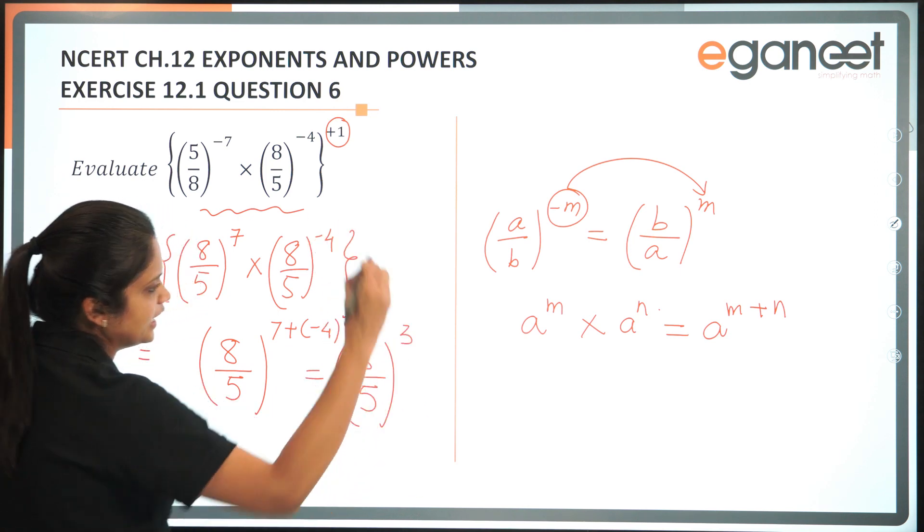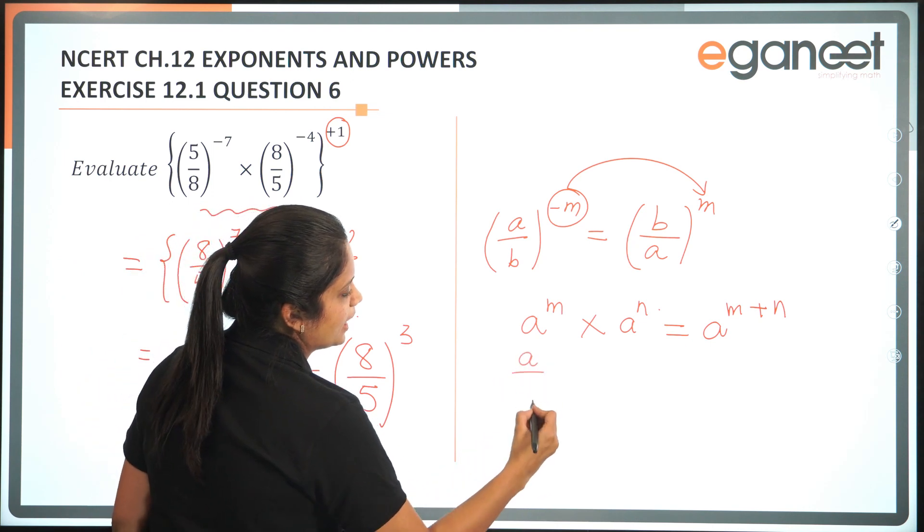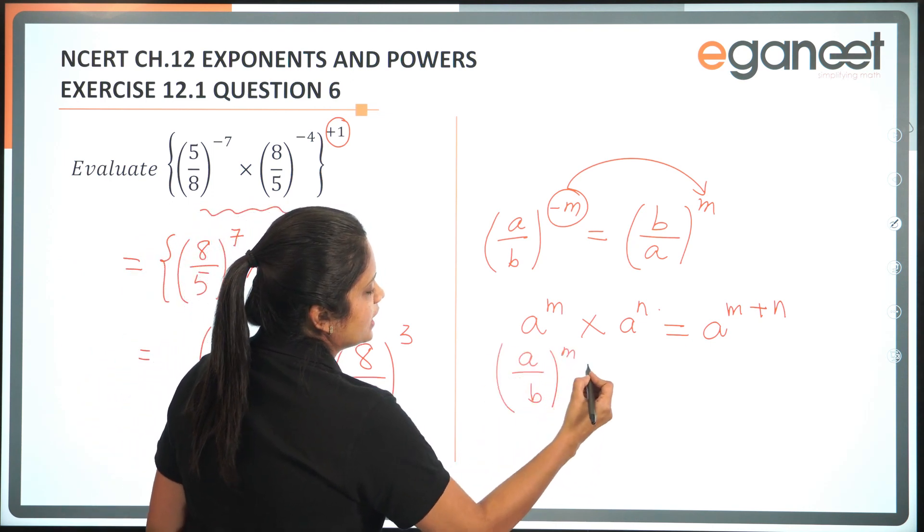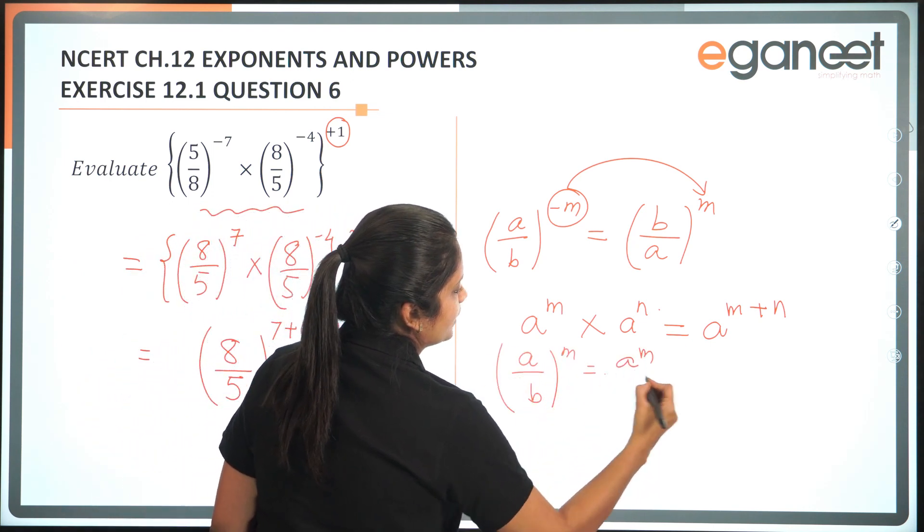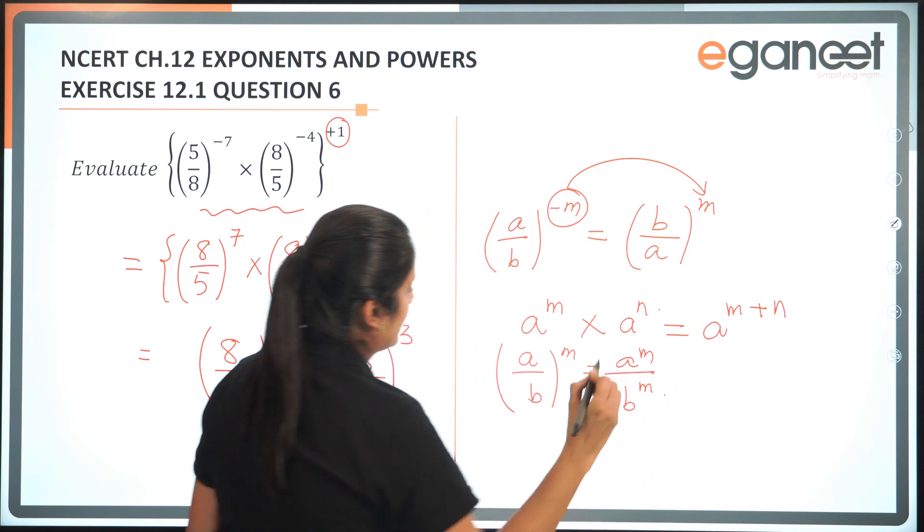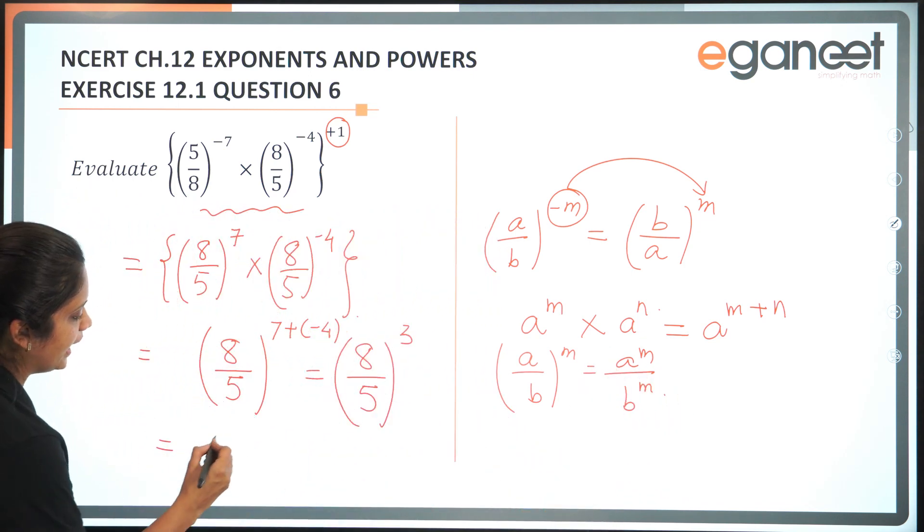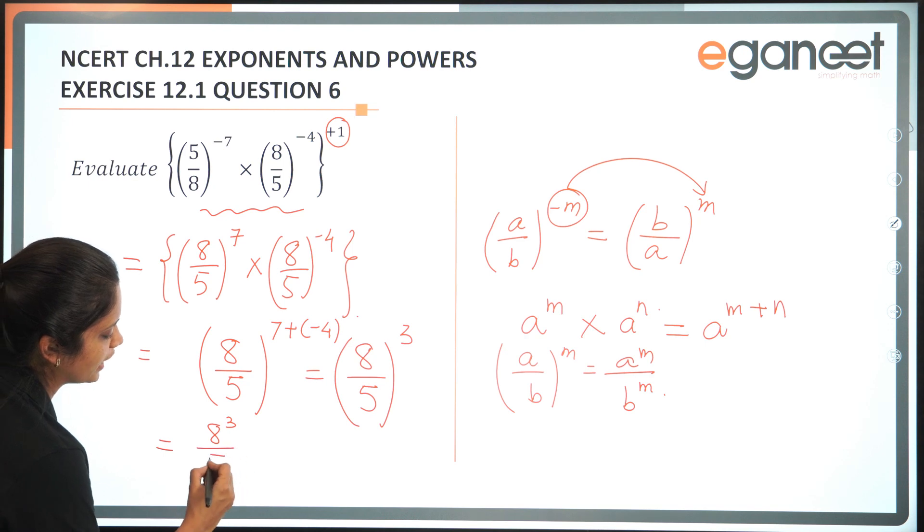Now we know that a by b whole to the power of m is a power m upon b power m. Thus I get 8 cube upon 5 cube.